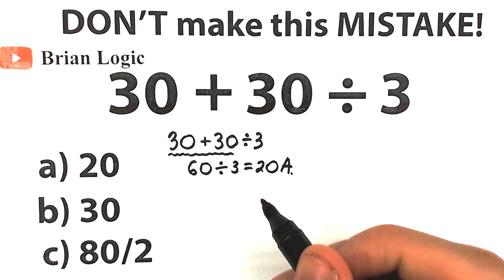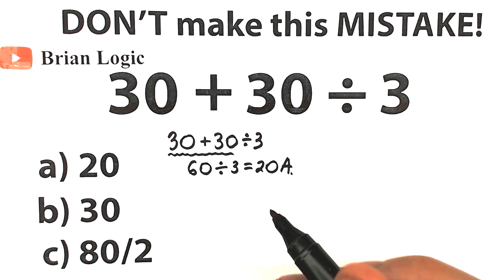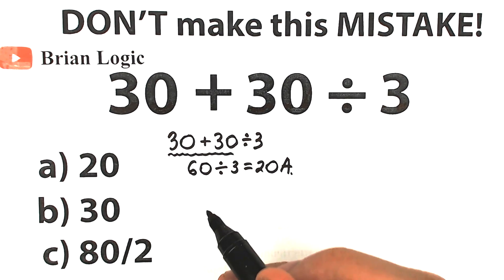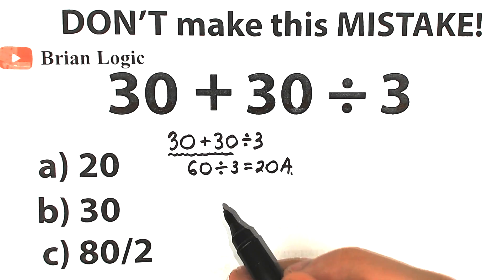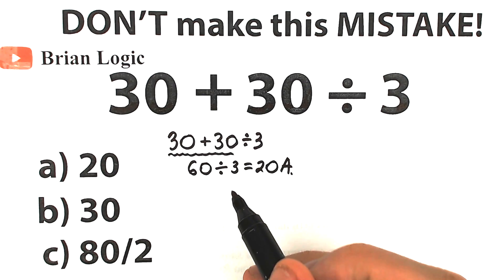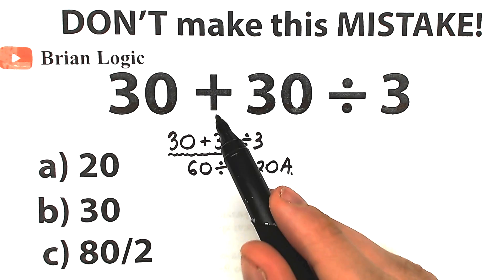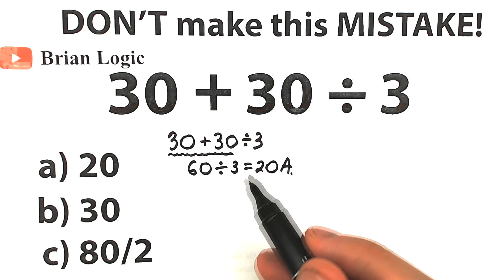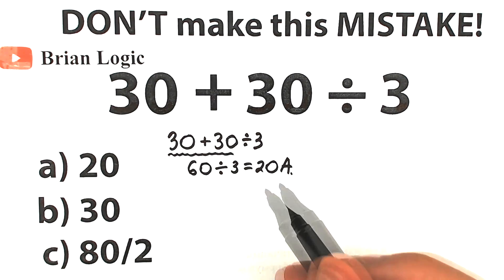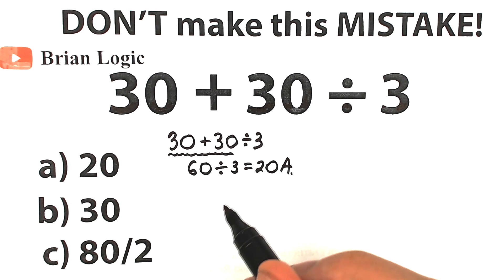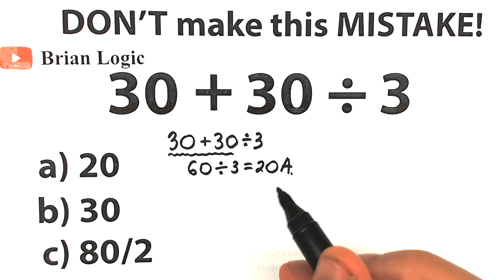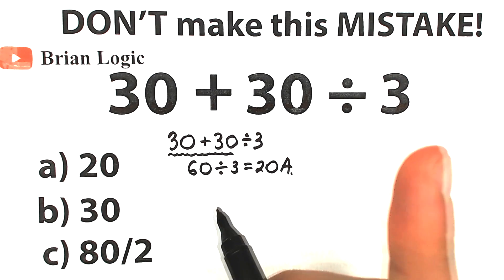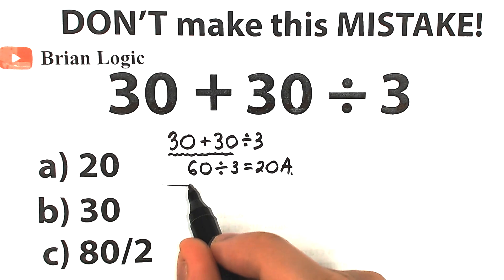But in math we should know the correct order, the correct property, the correct rule — because what makes all the difference in the world is the order we do this problem. Do we do division first, then addition, or addition first, then division? This is a really important moment, because in math we can't have two answers. We should solve this according to the correct order of operations, and we should have one and only one correct answer.